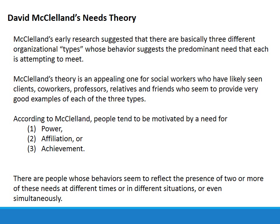According to McClelland, people tend to be motivated by a need for number one, power; number two, affiliation; and number three, achievement. There are people whose behaviors seem to reflect the presence of two or more of these needs at different times, in different situations, or even simultaneously. So they don't appear in a vacuum and we're not just motivated by one thing through our entire lifetime.